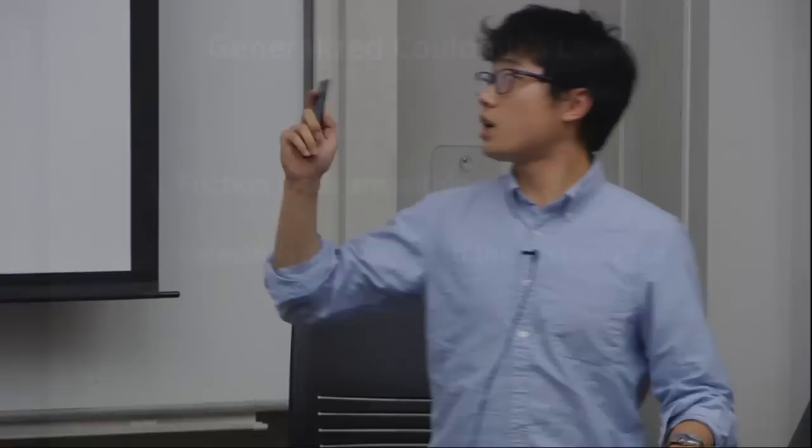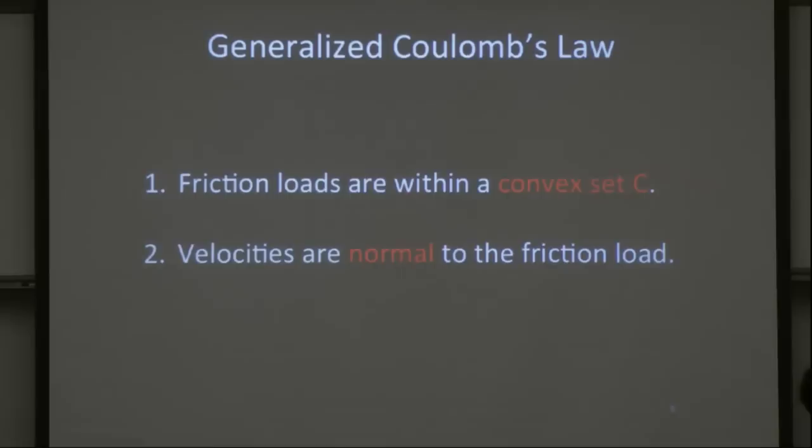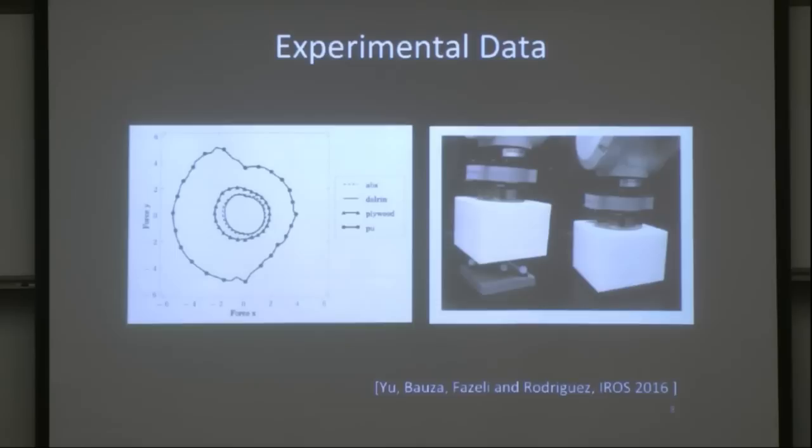The generalized Coulomb law can be summarized as: friction loads are within a convex set C, and velocities are normals to the friction load. Now things get more complicated in a plane. If you put a center of rotation here and compute the corresponding linear velocity direction at each supporting point, the load is parallel to it, scaled by the magnitude of the normal pressure force. For a three-point support, you can sum the linear components and torques and solve for the exact pressure — there are just three equations.